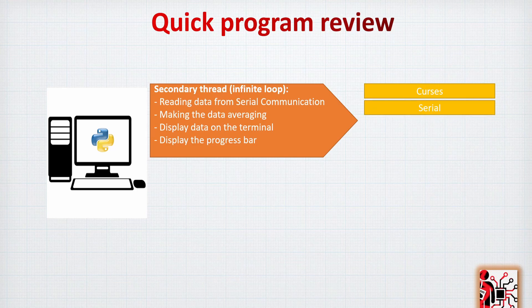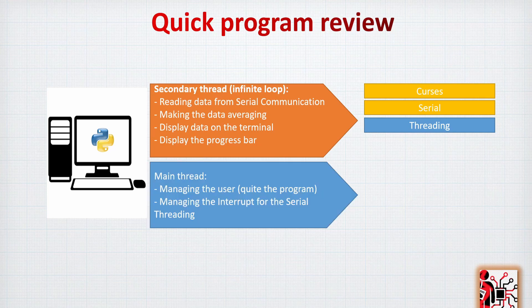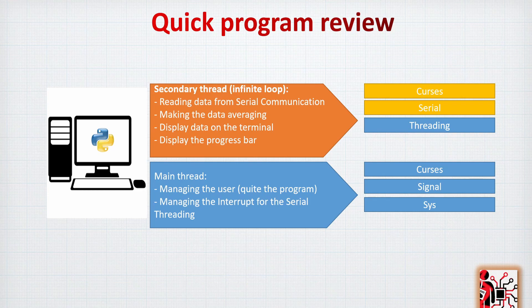For this we will use the curses module and the serial module. These are shown in yellow because on Windows you'll need to download the curses library via pip, and serial is also a separate library to download. We'll also use threading, which is a standard Python library. The main thread manages user input — specifically quitting the program — and handles interrupts for the serial thread using the curses, signal, and sys libraries.